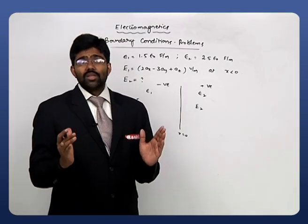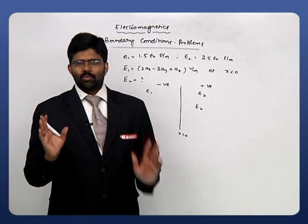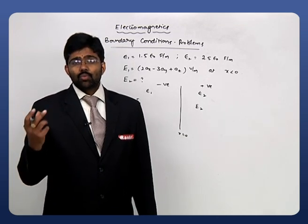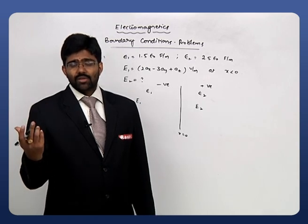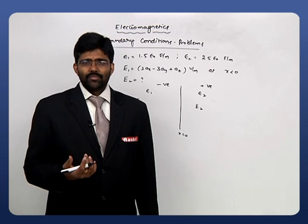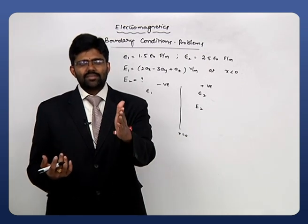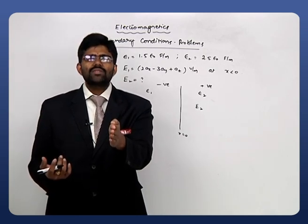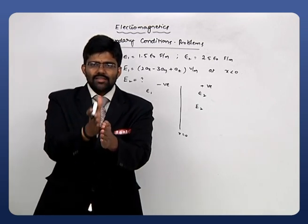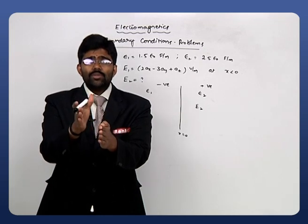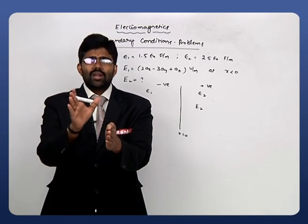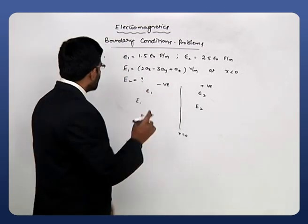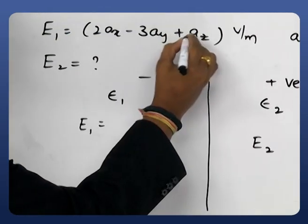We must decompose the electric field intensity into tangential and normal components, because the boundary conditions relate these separately — there is no direct relation in xyz. For the x=0 boundary (the yz plane), the vector normal to it is always in the x-direction. So any component in the x-direction is the normal component; all remaining components are tangential.